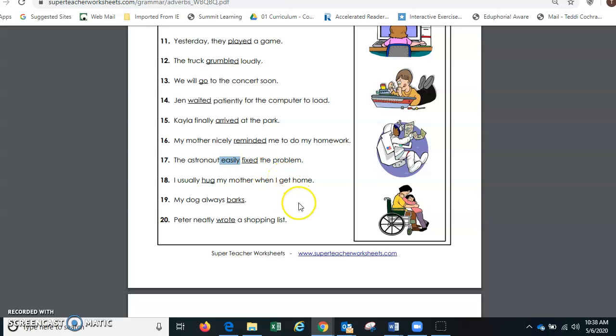I usually hug my mother. Is there a clue in this sentence where the adverb is? Yes, usually, right here. And how about my dog always barks? Is it telling us how he barks? No, but he's probably barking loudly. Is he telling us where he barks? No, but he's telling us when he barks. He always barks. There's no ly in that one, so we had to figure that one out ourselves.